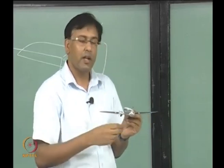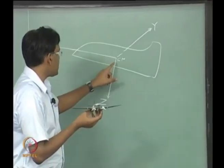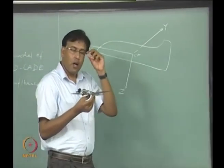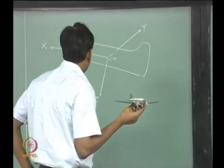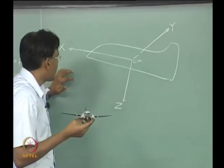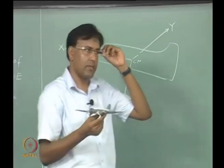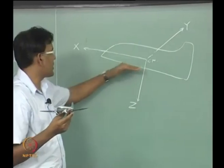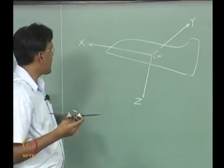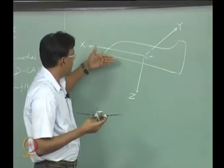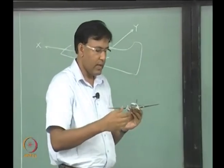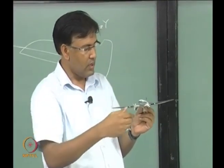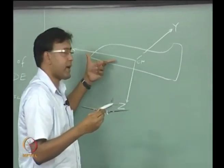The x axis can be taken as the line joining the centers of the fuselage cross sections along its length. If the center of gravity of the aircraft is not lying along that line, then we have to define the x axis differently — it must pass through the center of gravity of the aircraft. The aircraft is actually symmetric about this axis.